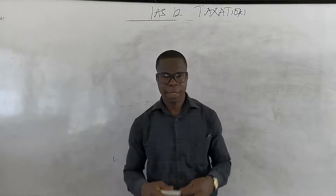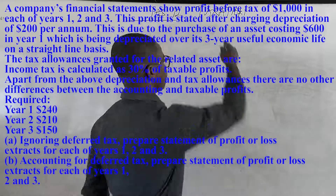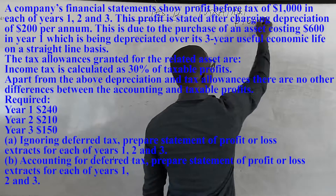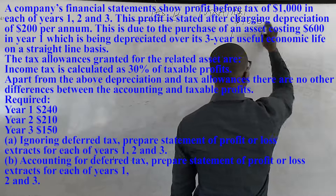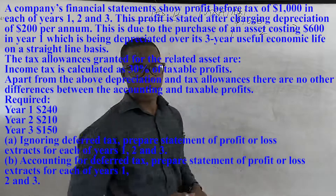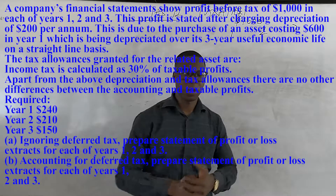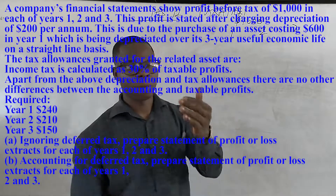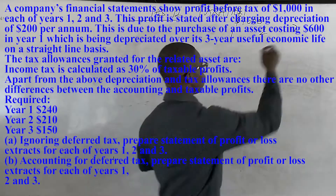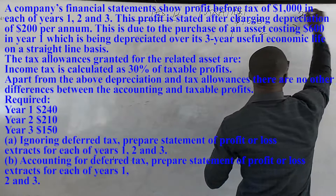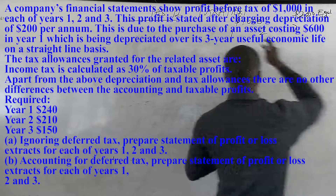Now let's look at the second question projected on screen. We were told that the entity makes a profit of $1,000 in each of the next three years — year one, year two, year three. This profit results from a fixed asset costing $600, depreciated over a useful life of three years. That means their depreciation is going to be $200 for each year.